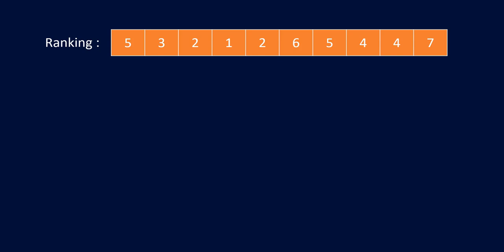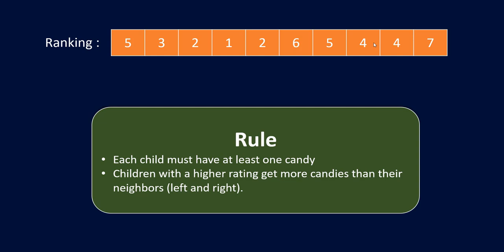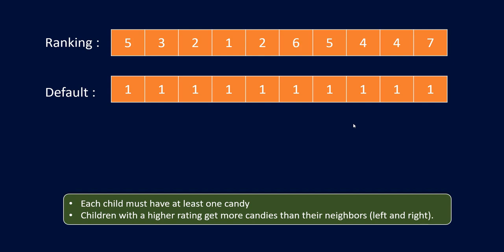The first thing to keep in mind is the rule that each child should have at least one candy. The second rule states that children with a higher rating will get more candies than their neighbors, including both left and right. So by default, each and every child must have at least one candy, and now we need to see their neighboring values to find the number of candies a person will get.